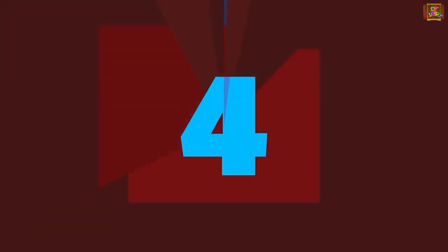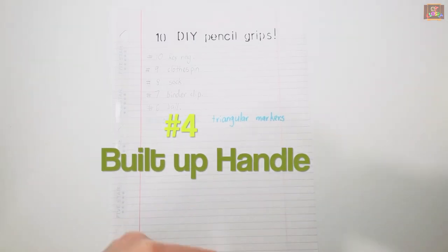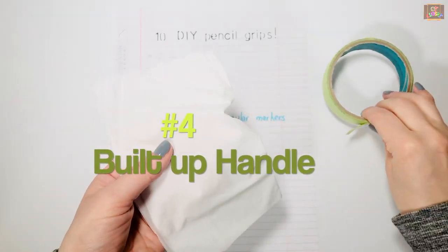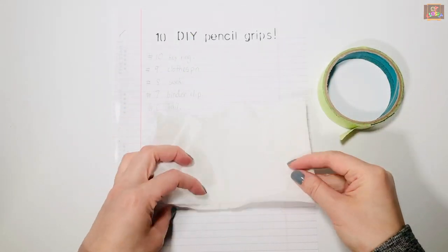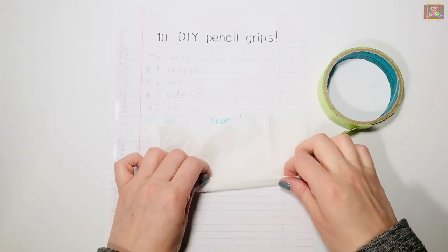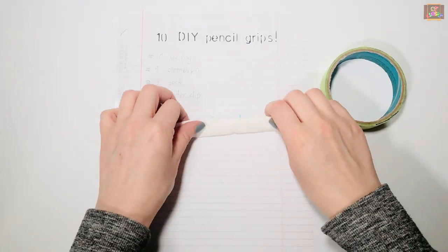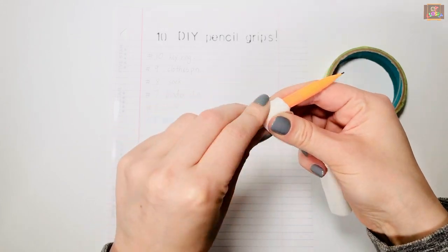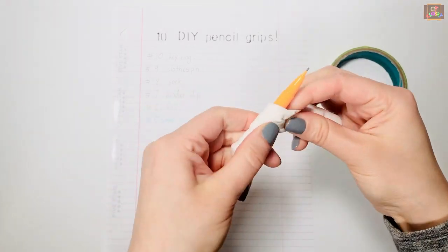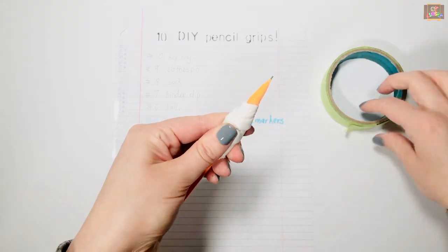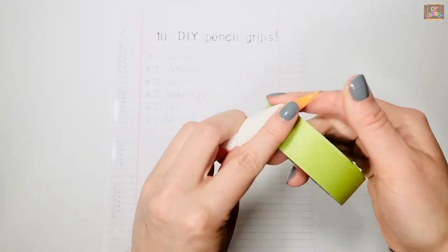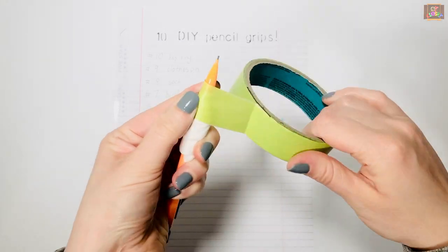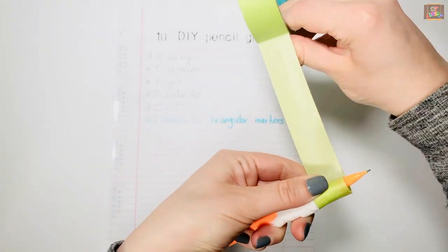Number 4: Built-up Handle. For this you will need one tissue paper and masking tape. Fold your tissue paper and then roll it around your pencil. Next, use your masking tape on top of the tissue paper until it's completely covered.